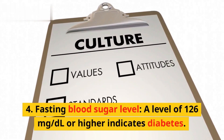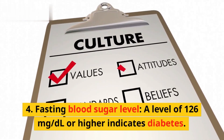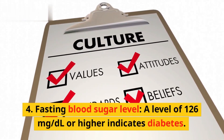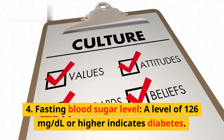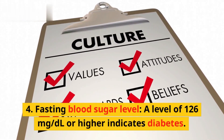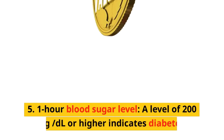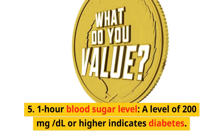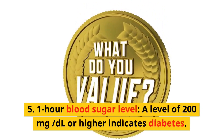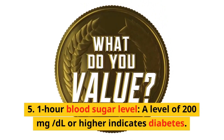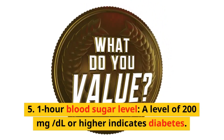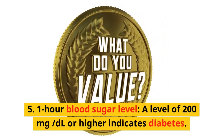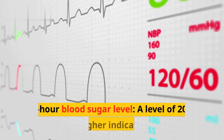Fasting Blood Sugar Level: a level of 126 mg per deciliter or higher indicates diabetes. One Hour Blood Sugar Level: a level of 200 mg per deciliter or higher indicates diabetes.